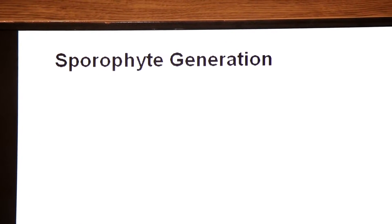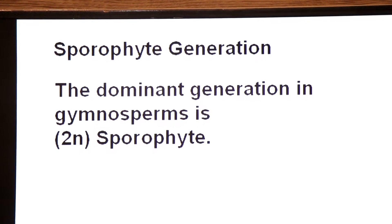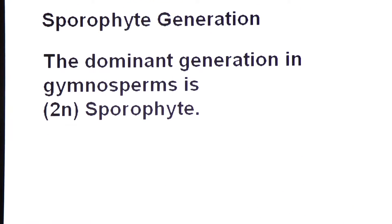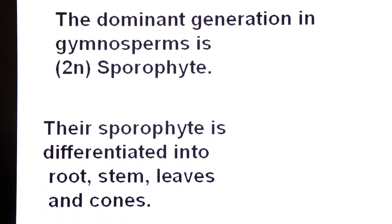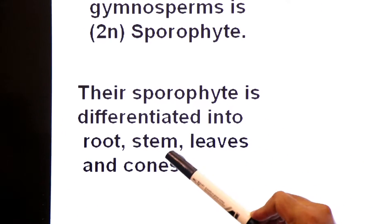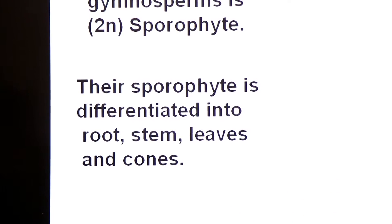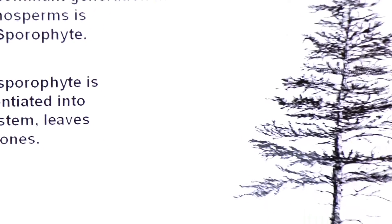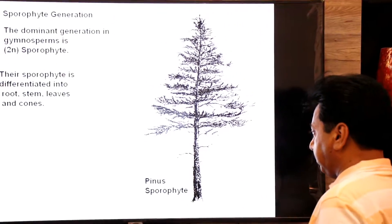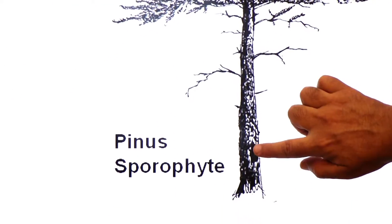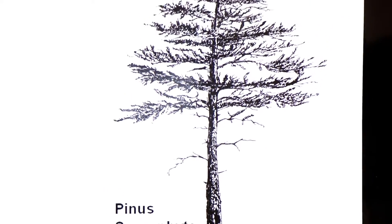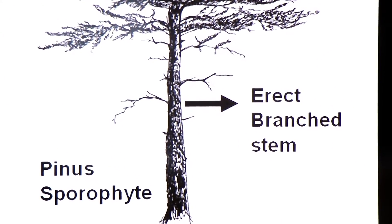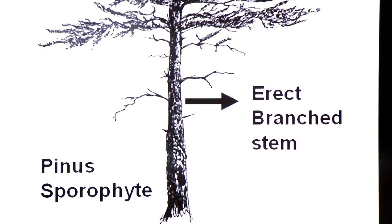Aab hum aate hain in ke dominant generation sporophyte ki taraf. In case of gymnosperms, the dominant generation is the diploid sporophyte, and their sporophyte is differentiated into true roots, stem, leaves, and reproductive organs (cones). Yeh ek sporophyte hai — pinus gymnosperm hai. Pinus sporophyte ka stem erect hai aur branched hai — it is an erect, branched stem.